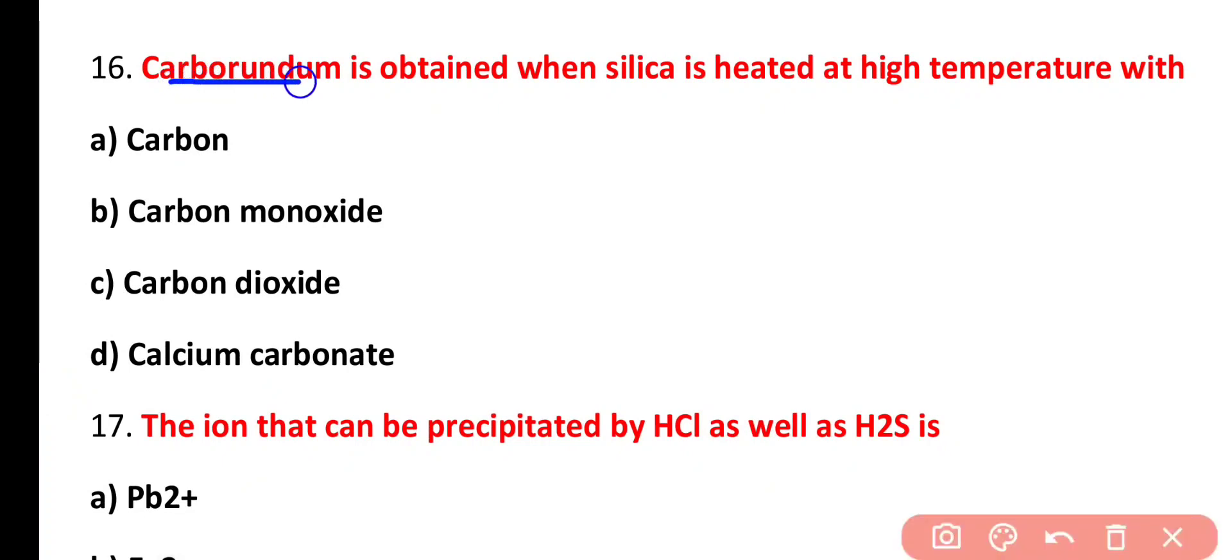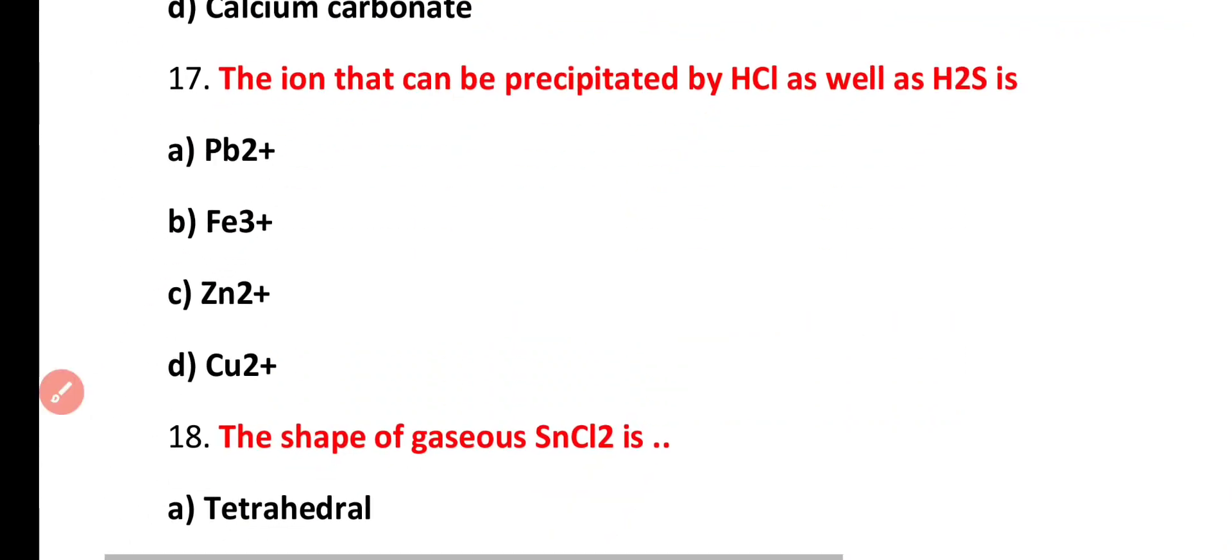Question number 16. Carborundum is obtained when silica is heated at high temperature with carbon, carbon monoxide, carbon dioxide, calcium carbonate. Correct answer is option A. Carborundum is obtained when silica is heated at high temperature with carbon.